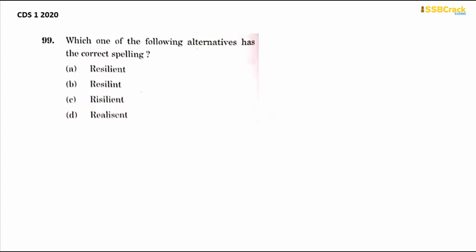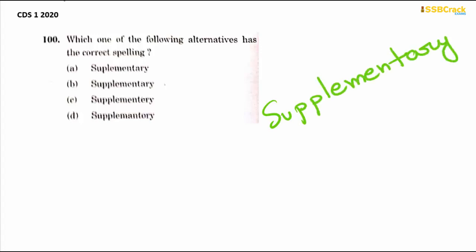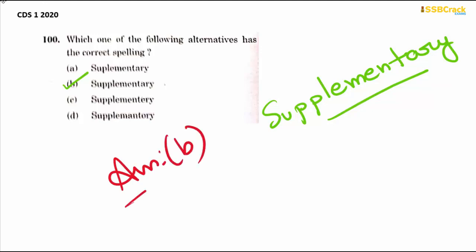Next is 'resilient' — R-E-S-I-L-I-E-N-T. Option A is the right answer. The last spelling to identify is 'supplementary' — S-U-double P-L-E-M-E-N-T-A-R-Y. The right option is therefore option B.